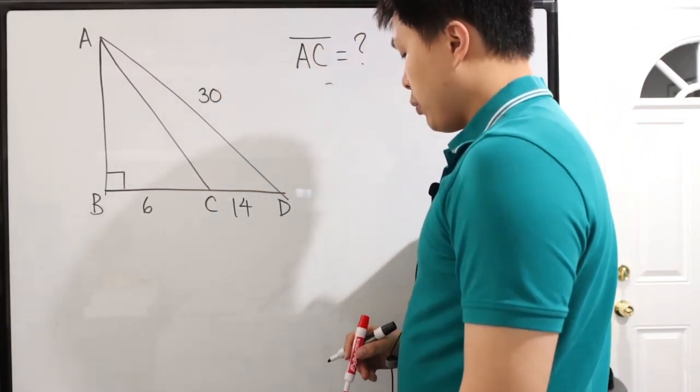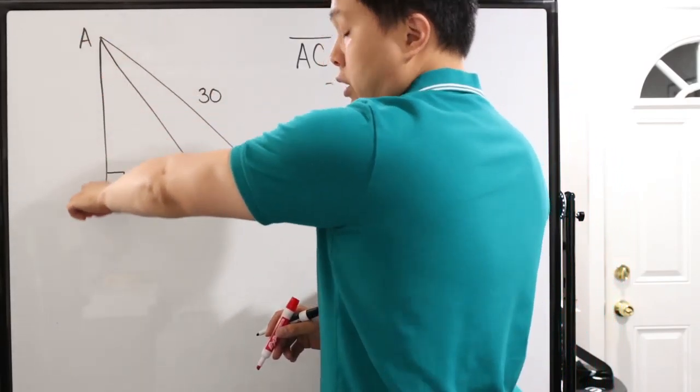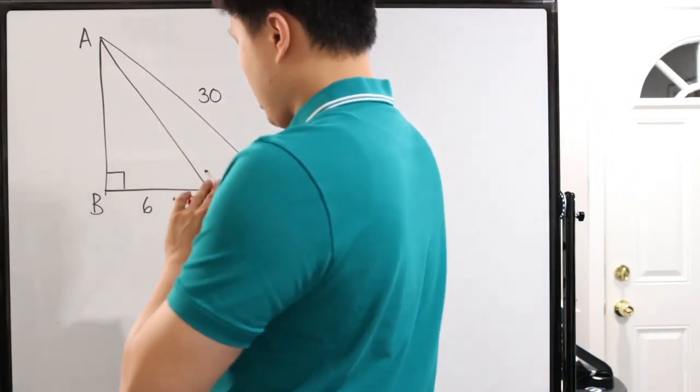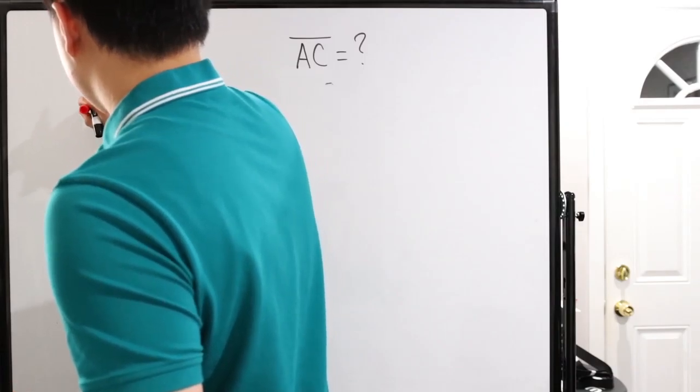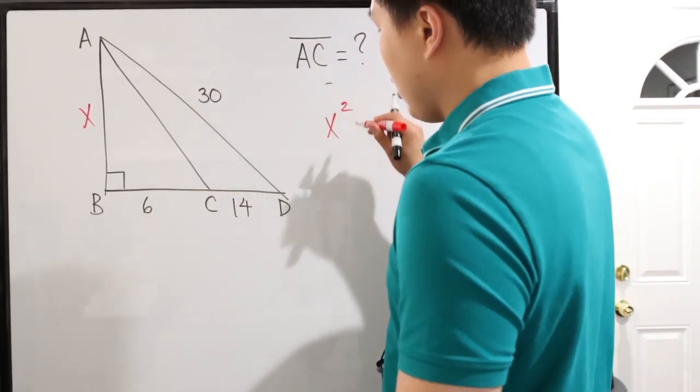First and foremost, let's see what we got. We got 6, 14, and 30. Well, we can find this length right here, AB, because we know that, well, let's just call this X so it's easier for us to work with. All right, we know that X squared plus